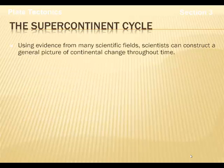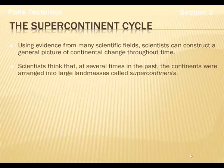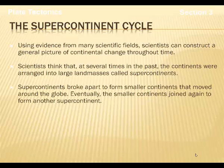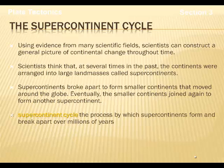The supercontinent cycle. Using a number of different evidences, scientists have constructed a general picture of what they think the continents may have looked like prior to their current positions. Scientists think that over many times in the past, the continents were arranged in large land masses called supercontinents. Those supercontinents eventually broke apart or rifted apart to form the current smaller continents. The supercontinent cycle is the process by which supercontinents form and break apart — scientists think this may have happened over millions of years.